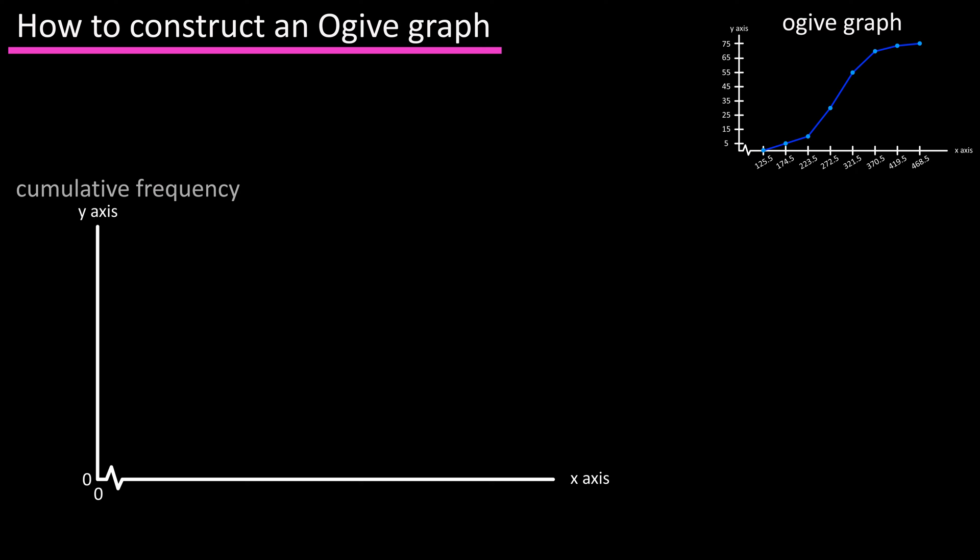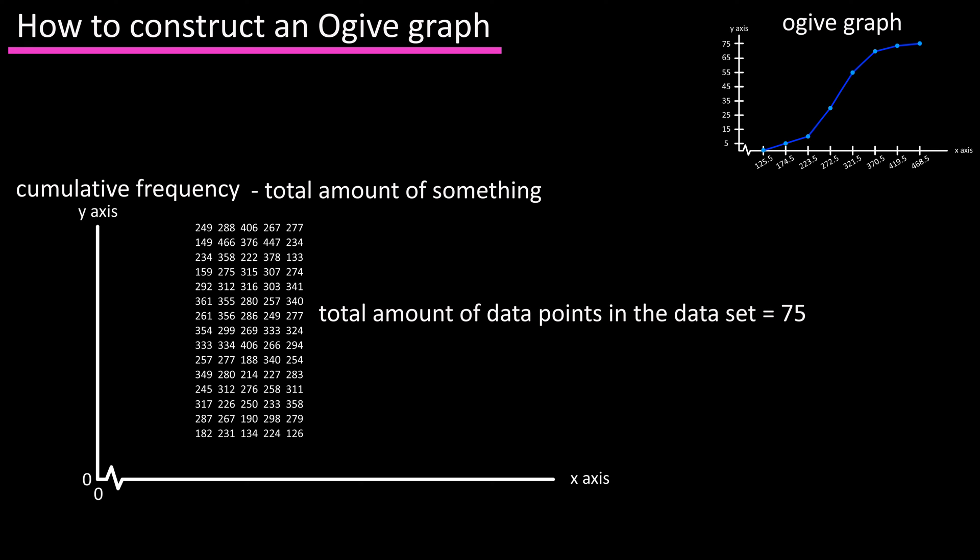The y-axis is going to be the cumulative frequency, and cumulative basically means the total amount of something, in this case the total amount of data points in the data set, which is 75.